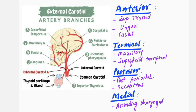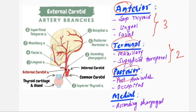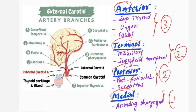The external carotid artery has eight branches grouped into four groups. The anterior group has three branches, the terminal group has two branches, the posterior group has two branches, and the medial group has one branch — totaling eight branches of the external carotid artery.